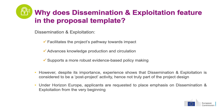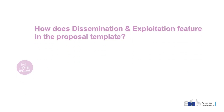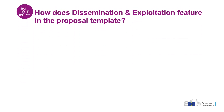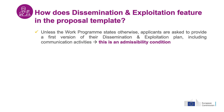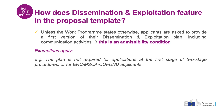This is why applicants are requested to place emphasis on dissemination and exploitation from the very beginning. On the practical side, how does dissemination and exploitation feature in the proposal template? Unless the Work Programme states otherwise, applicants are asked to provide a first version of their dissemination and exploitation plan, and this is an admissibility condition. This plan is not required for applications at the first stage of two-stage procedures, and some proposers — for example, those applying in response to an ERC Call or the Marie Sklodowska-Curie Actions Co-Fund Programme — are exempted from this obligation.